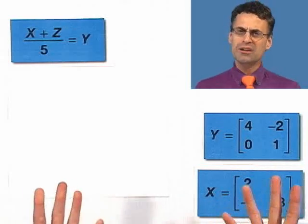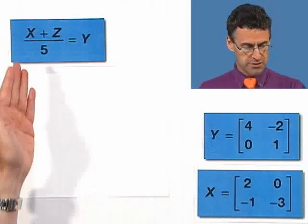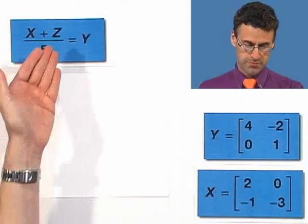All right. So what do we do here? Well, the answer is absolutely nothing. Don't worry about it. It's all good. What we're going to do is solve this as we would solve any algebraic equation of this form for z.